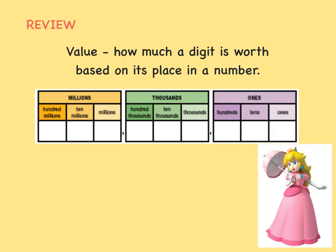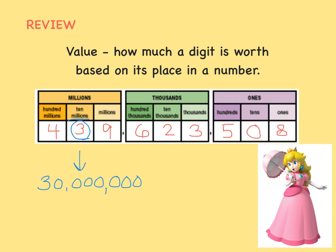You have learned that value is how much a digit is worth based on its place in a number. The value of the three in the 10 million's place is 30 million, while the value of the three in the thousand's place is 3,000. The digits are the same, but their values are very different because of the place they are in in the number.